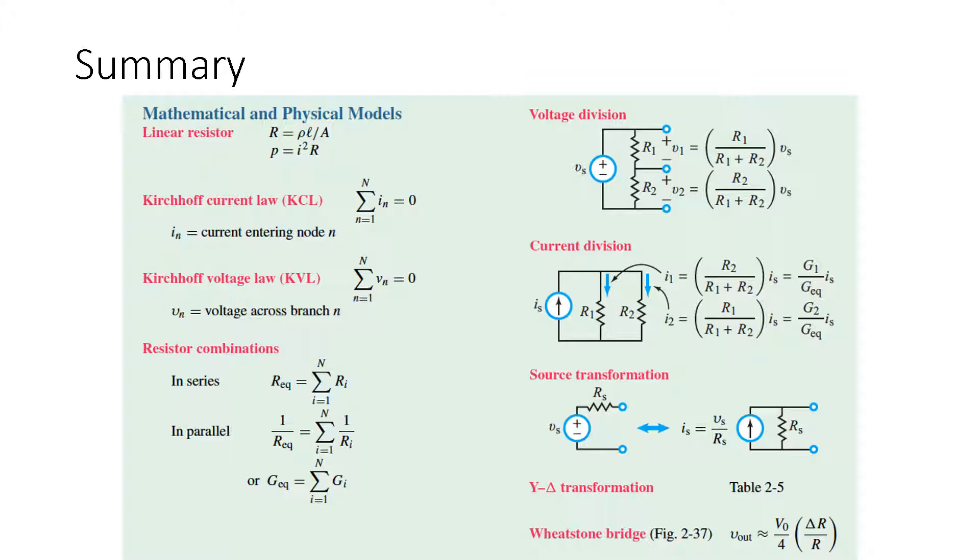In the top left we have our linear resistor values with our resistance equals ρL over A. And we also have the equation for power equals current squared times R, power equals voltage times current. And if you change V equals IR and substitute that in, you're going to get power equals I squared R or any of the other combinations that might be useful or relevant to you.